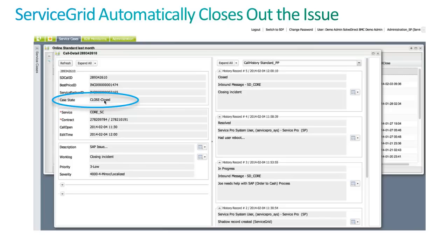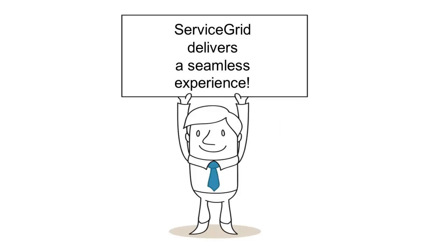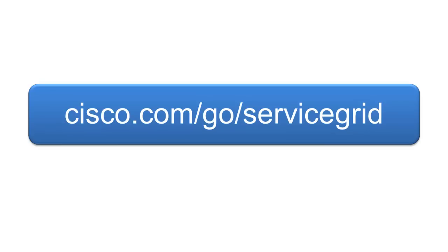This automation provides much more accurate mean time to resolution. Bob is happy because he knows when he has an issue, Service Grid provides real-time communication with his service partners, so the issue is fixed faster. With Service Grid, Bob is one step ahead and can focus on what he does best, while Cisco Service Grid builds his integrated service ecosystem. For more information, visit cisco.com/go/servicegrid.